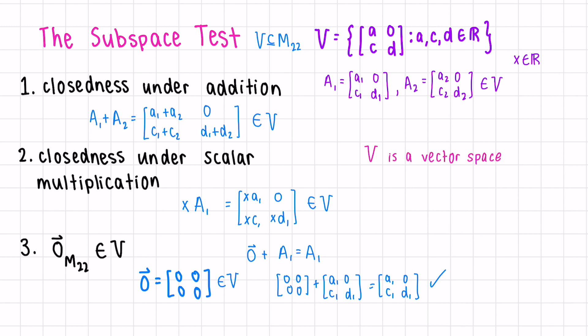And to be more specific, we can say that V is a subspace, not just a subset, this is a subset, but a subspace of M22, meaning it's contained in the set of all 2 by 2 matrices, M22, and it's also a vector space within that.